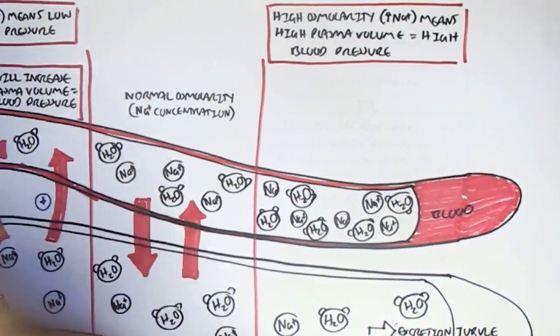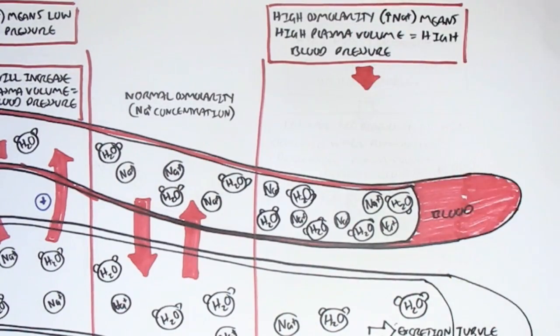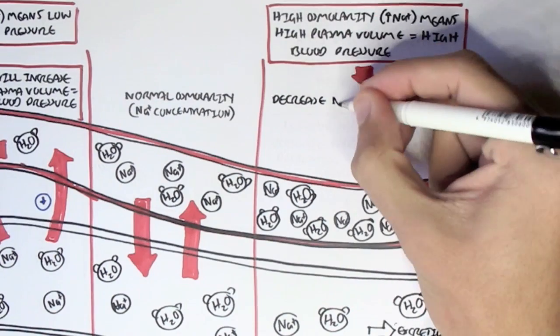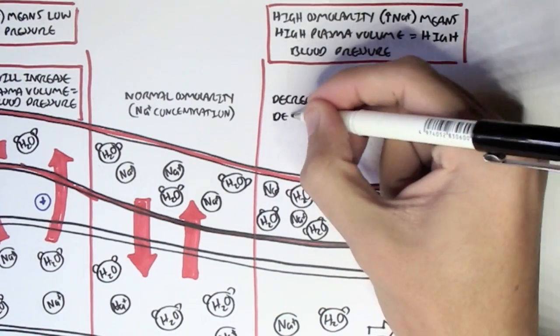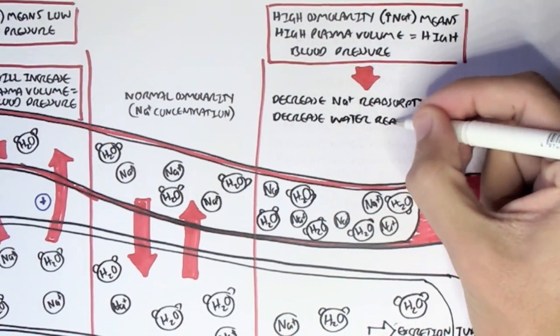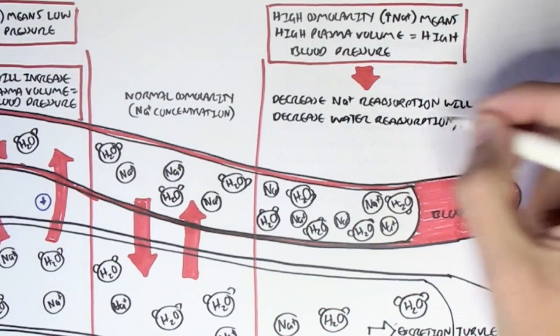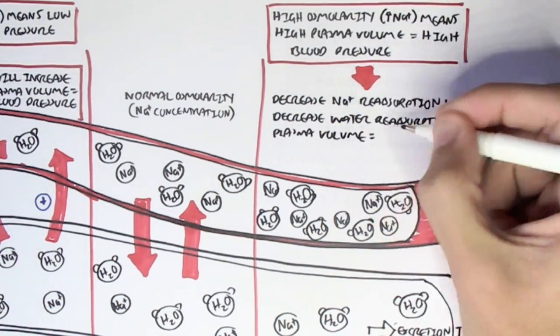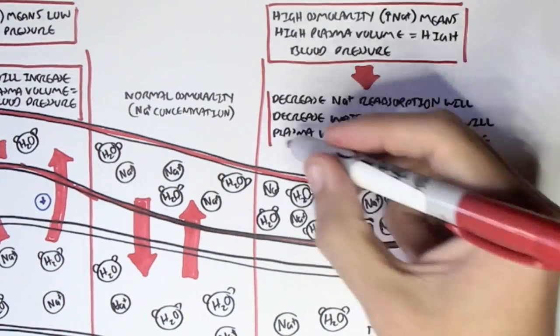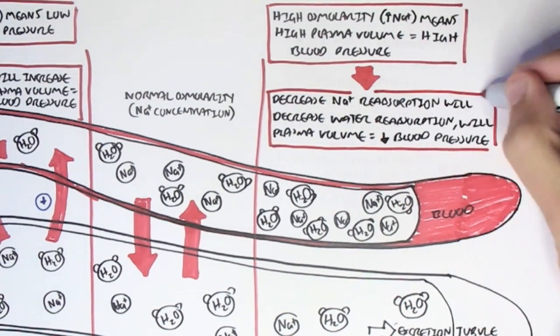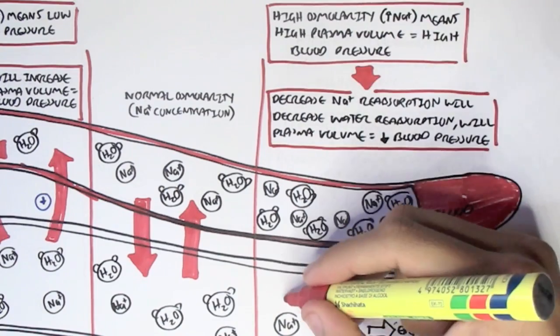When this occurs, the body will decrease sodium reabsorption, which therefore decreases water reabsorption and plasma volume, which means we decrease blood pressure. I hope from all this, you can see how sodium, water, and plasma volume influence blood pressure, and how this actually works within the kidneys.